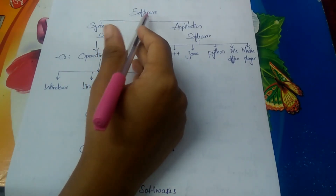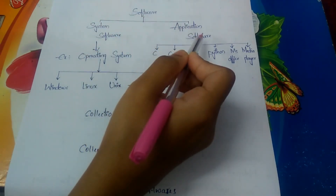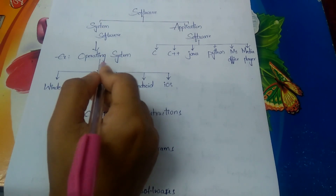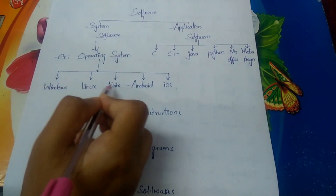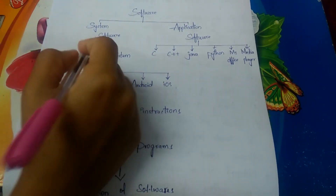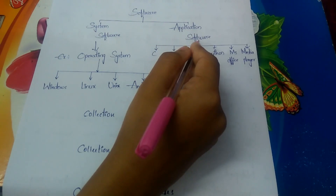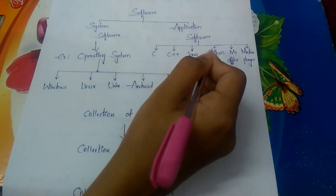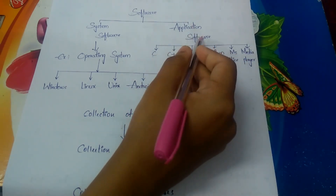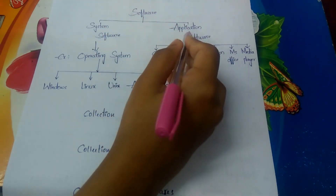Looking at the flowchart of software: software is divided into two components — system software and application software. System software includes operating systems like Windows, Linux, Unix, Android, and iOS. Application software includes programming environments and tools like C, C++, Java, Python, MS Office, Media Player, and so on. These are the two types of software.